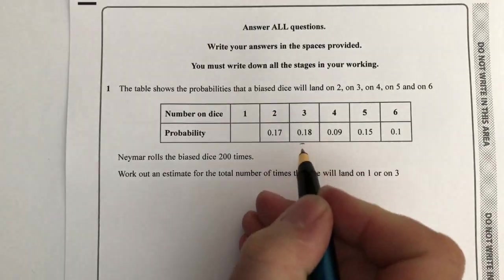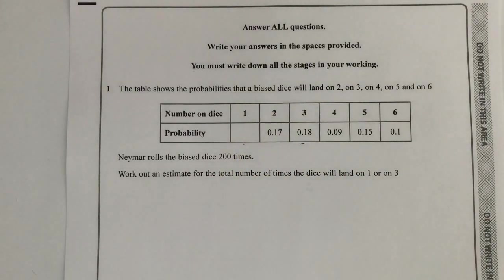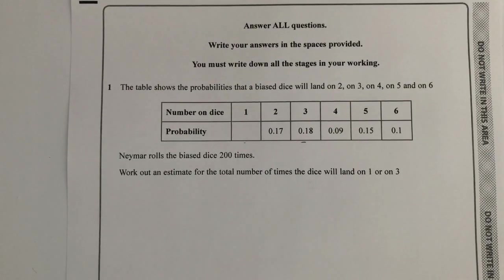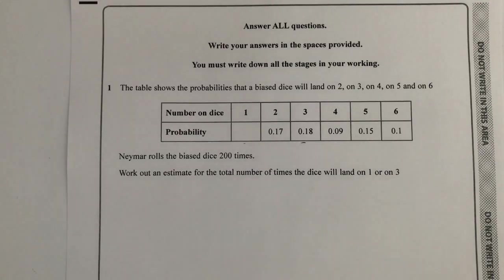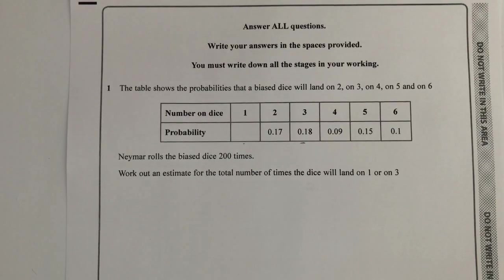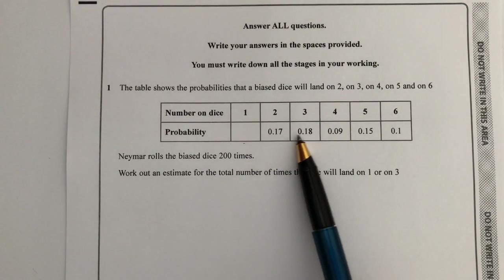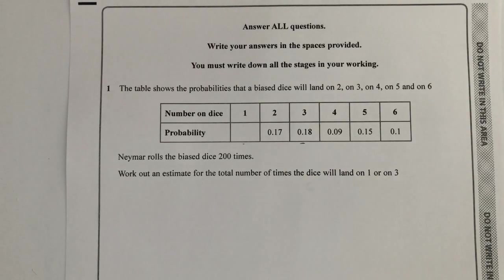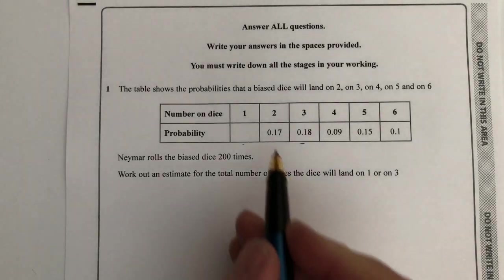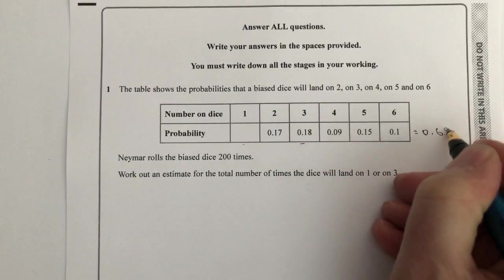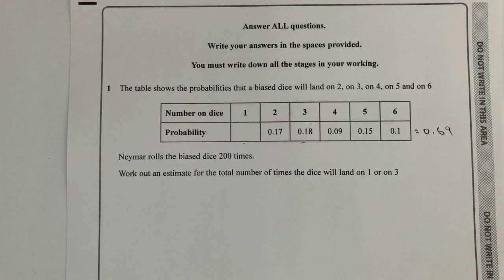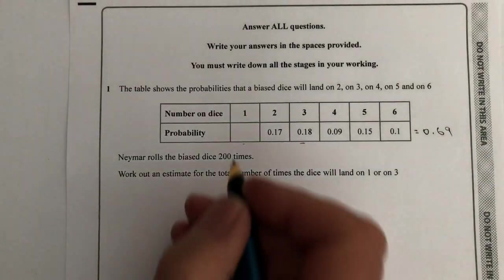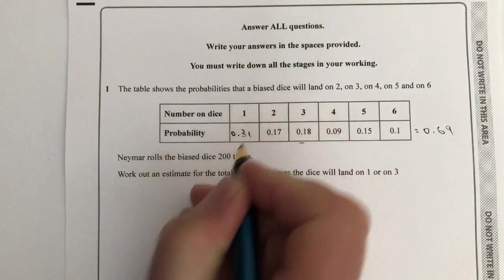We're okay with the 3, we've got to work out the 1. In order to do that, the total probability that it will land on one of the sides is going to be 1. So what we've got to do is add all of these up and then take it away from one. If I add all of those up I'm going to get 0.69, so the probability of landing on one is 0.31.